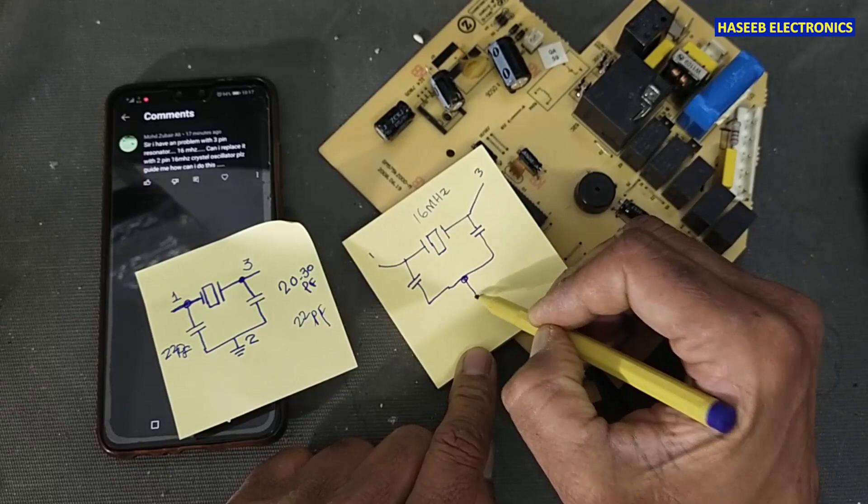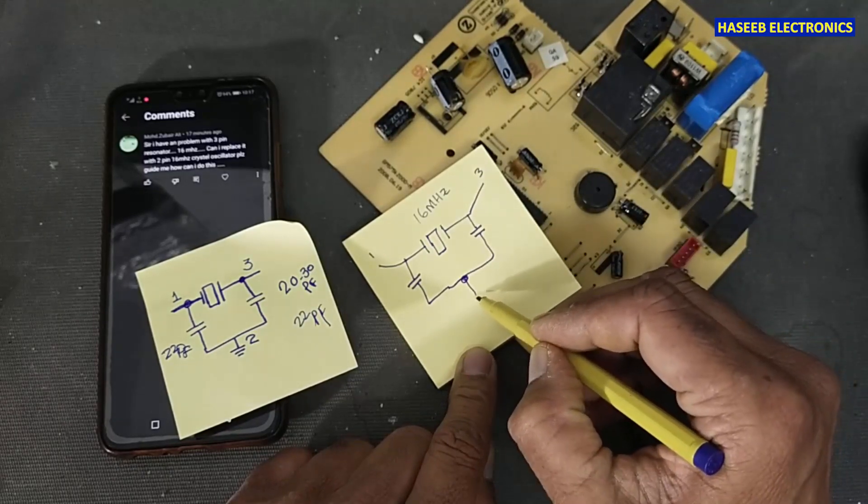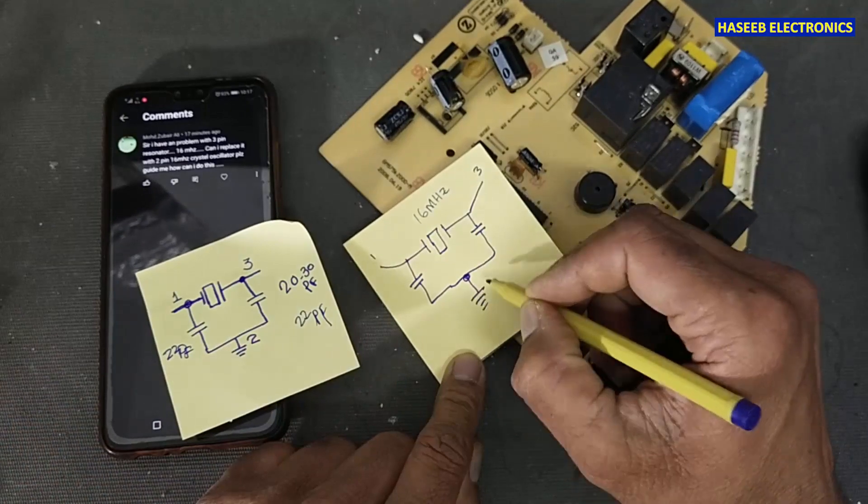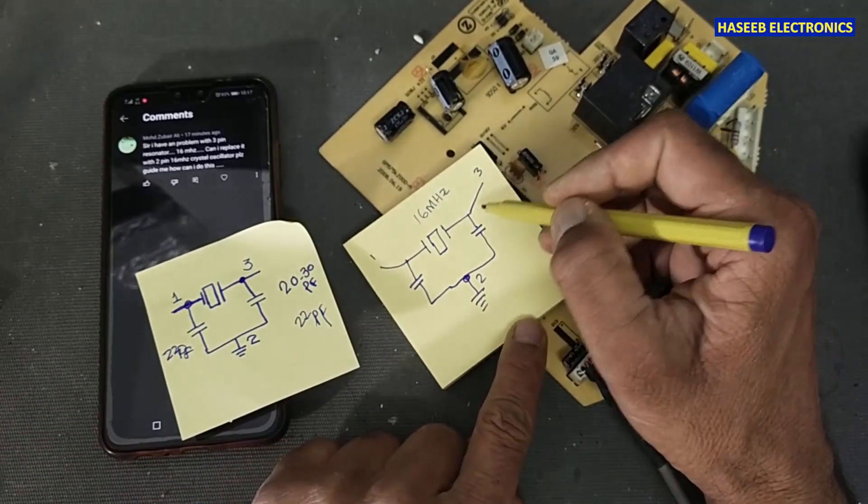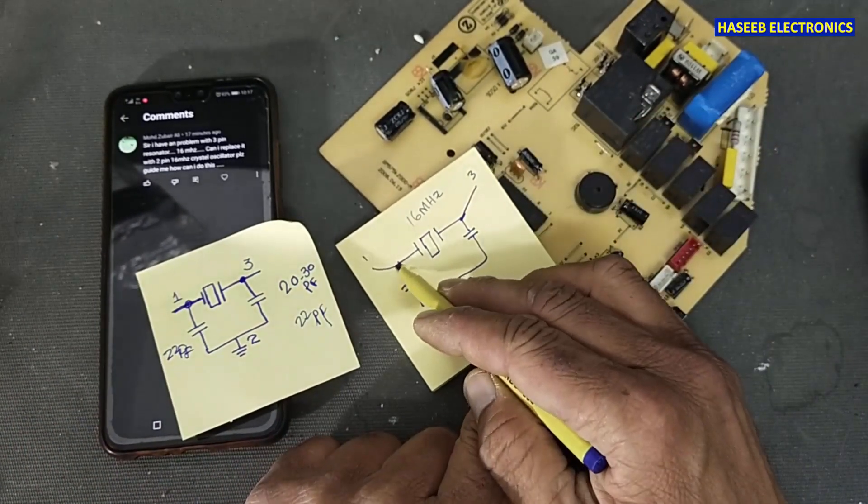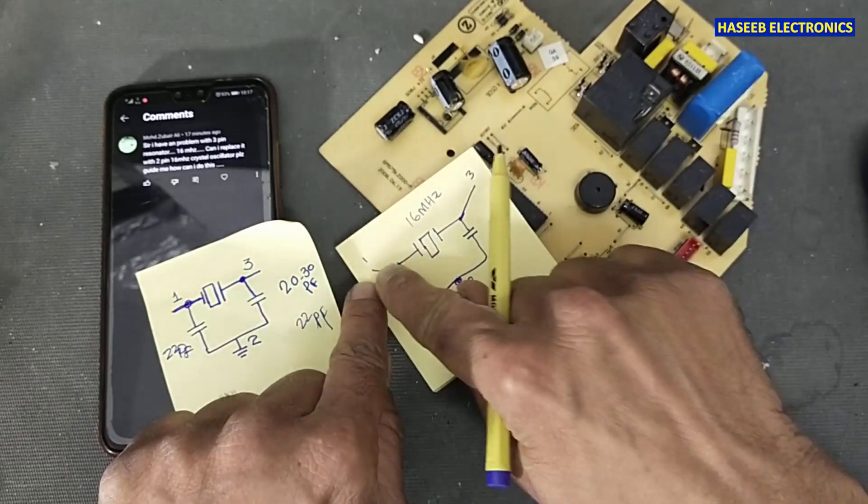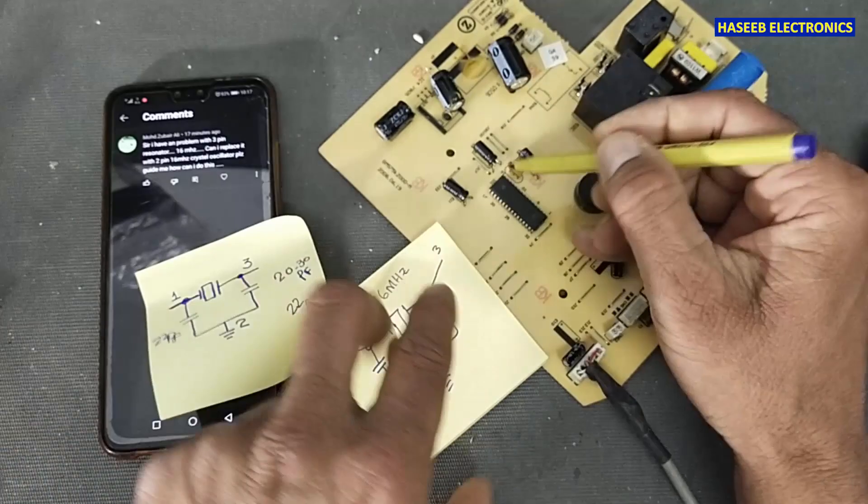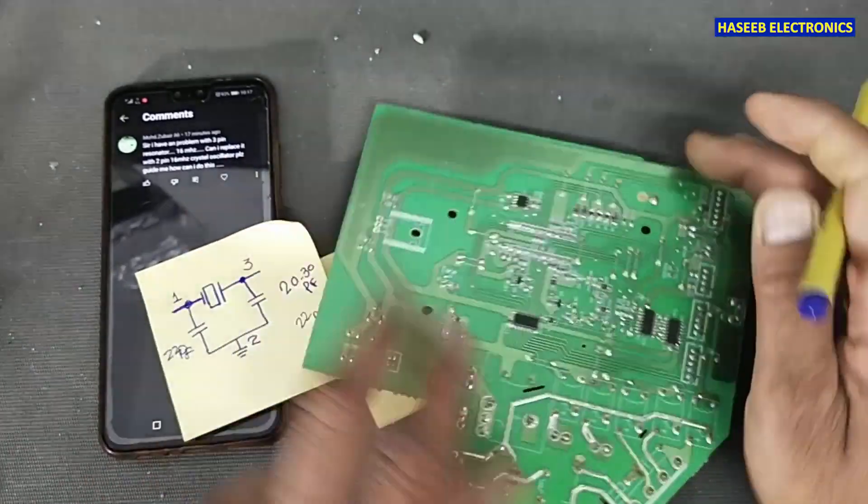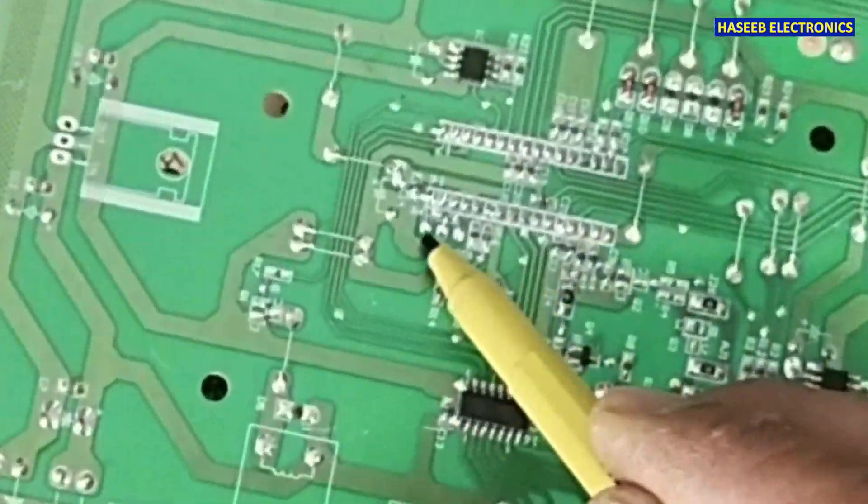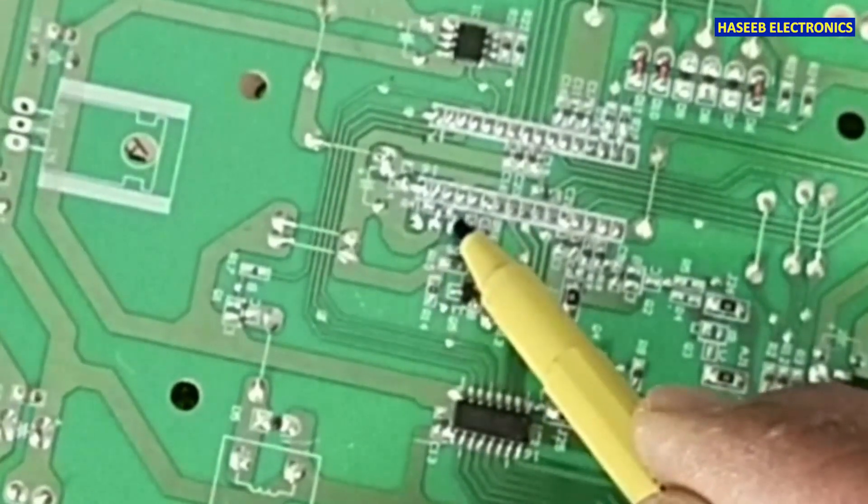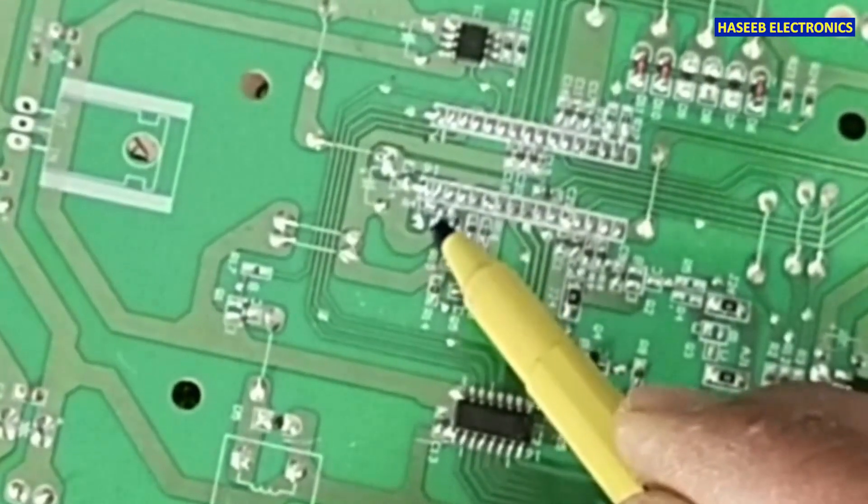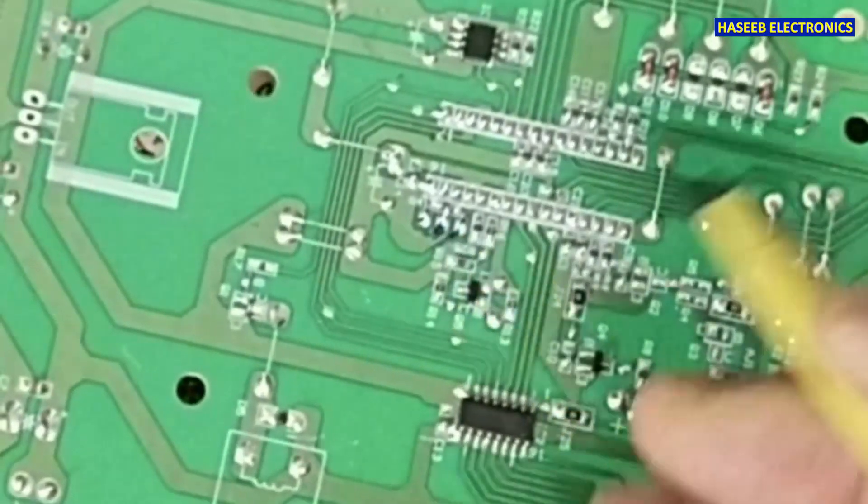And we will connect it to ground point where the pin number two was connected. So on the PCB we will install crystal pin number one here, pin number two here at the place where is connected. Pin one will come here, pin two will come here, and we will make one capacitor between these two points and one capacitor between these two points. It will work.